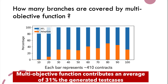The last research question: how many branches are covered by our lightweight objective function? In the figure, we count the percentage of test cases generated by Sfuzz using our strategy. On average, Sfuzz contributes about 80% of generated test cases.